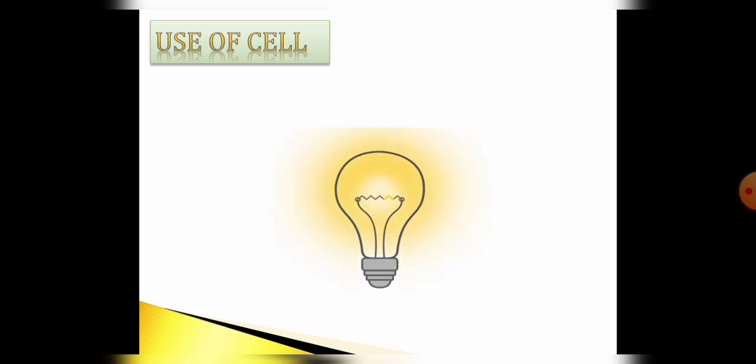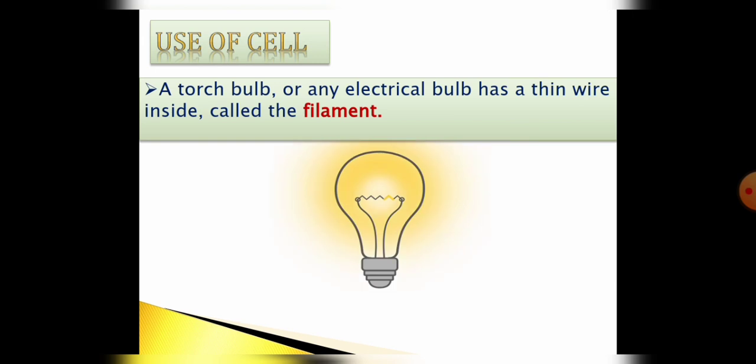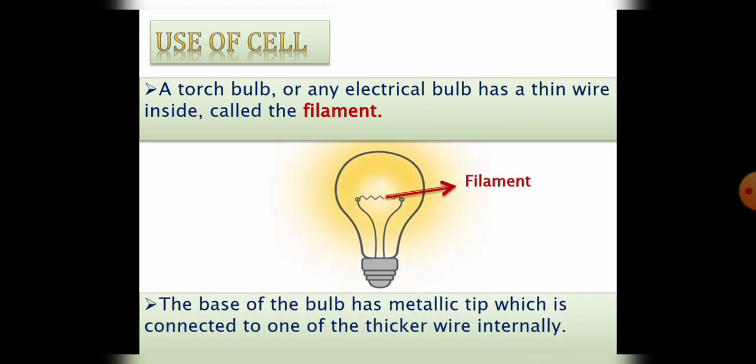Students, as you can see here a glowing bulb. Now if you closely observe it, you will see a zigzag wire called the filament. See this is a filament. The base of the bulb has metallic tip which is connected to one of the thicker wire internally.